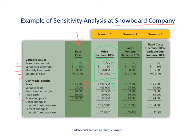Contribution margin will go up because our sales price went up: $192,500 minus $105,000 is $87,500. Our fixed cost stayed the same in this scenario, and our operating profit is expected to go up to $37,500.